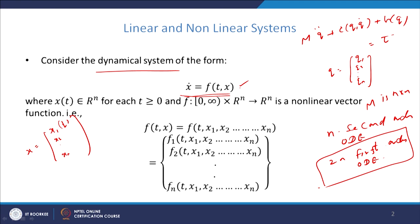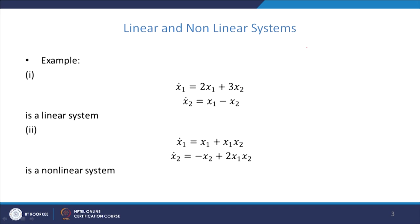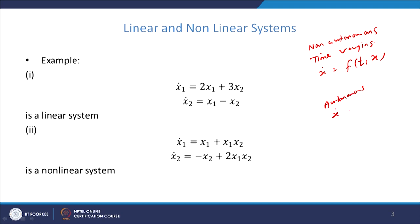This can be classified into various types. One is the non-autonomous or time-varying system, where ẋ = f(t, x) and t appears explicitly in the equation. Autonomous means time-invariant: ẋ = f(x), where t does not appear explicitly. Even though all systems vary with respect to time, the classification of time-varying vs. time-invariant is based only on whether t appears explicitly in the equation.